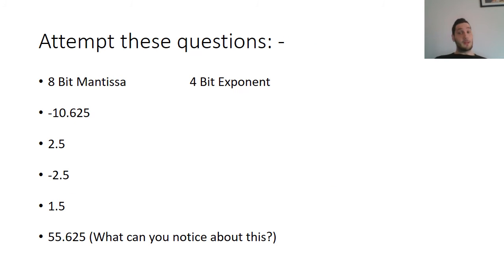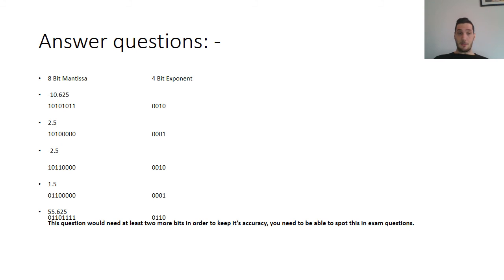So now attempt some of these questions. Maybe press pause to see how you get on. But you might notice something about this last question. Press pause, try these out, and see how you get on. These were the answers to the questions, so that you can try them out yourself and do some exam preparation. Notice the question at the bottom is talking about accuracy. You need at least two more bits to the mantissa in order for the question to be completely accurate. Otherwise, you're going to lose accuracy, and you need to be able to make a point of that in the exam.